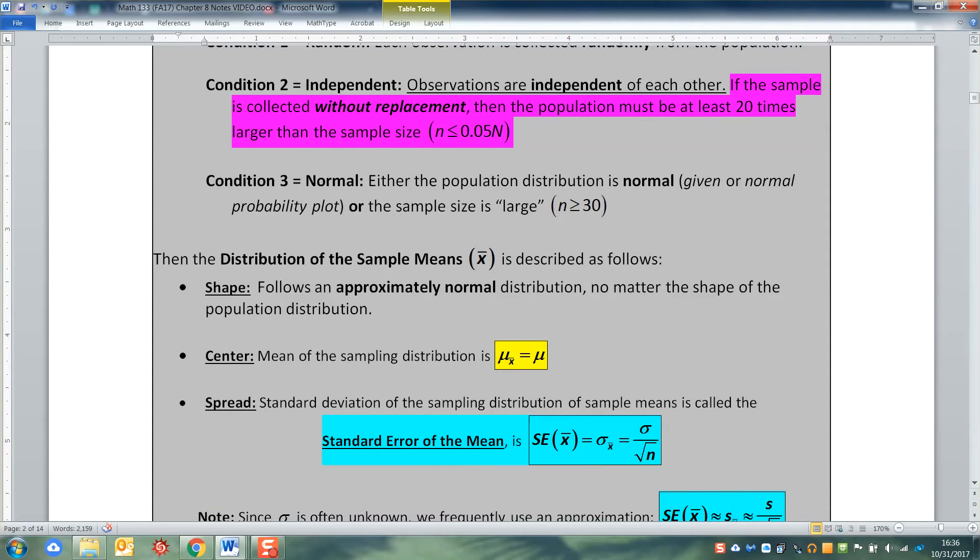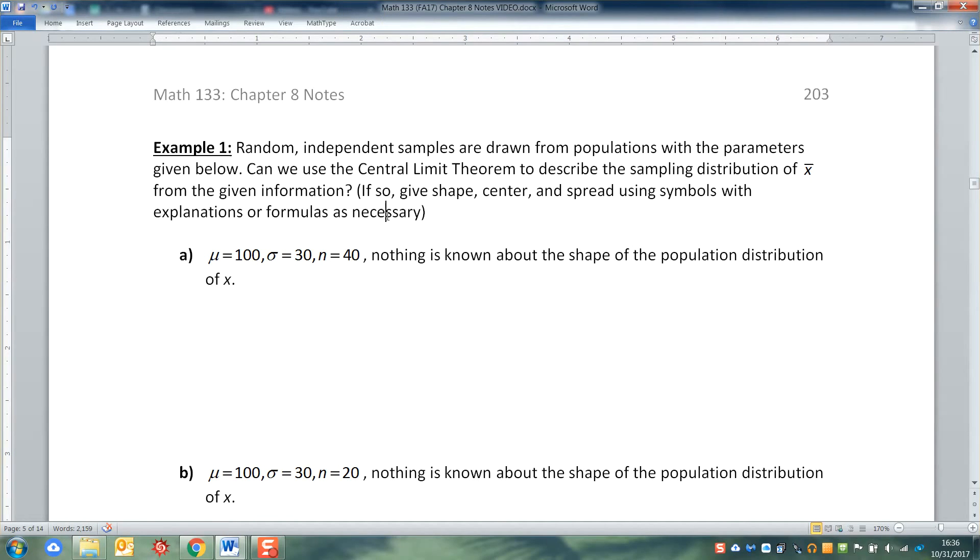So now we want to apply all of this to some new problems. So let me scroll down to the next page and look at example one. Everything else up to this point has just been establishing how this works. So now we're going to actually get to use it. So we have random independent samples are drawn from populations with parameters given below.